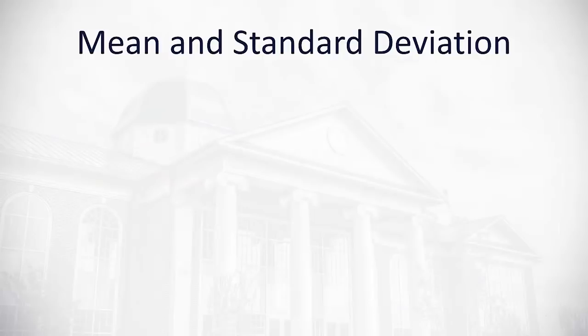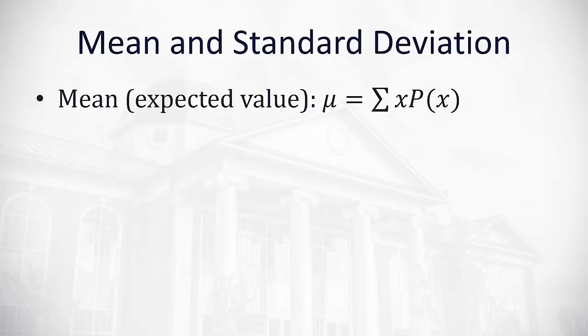With a probability distribution, we may be interested in calculating the mean or the standard deviation. With probability, we often will call the mean the expected value, what we expect to happen. To calculate that, we'll find the sum of all the individual values times their probabilities: μ = Σ xP(x). This is very similar to what we did when we had frequencies with weighted averages.